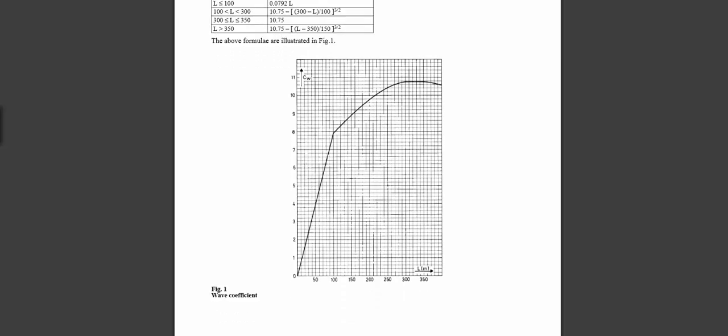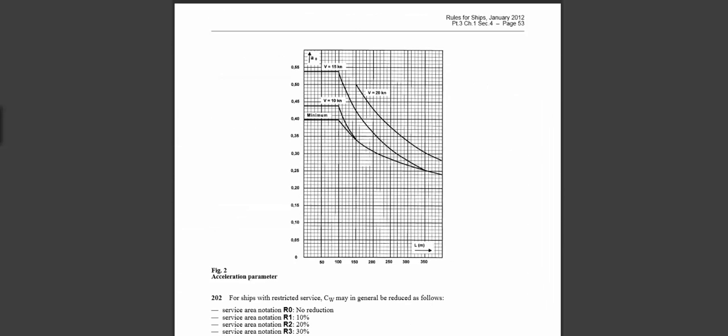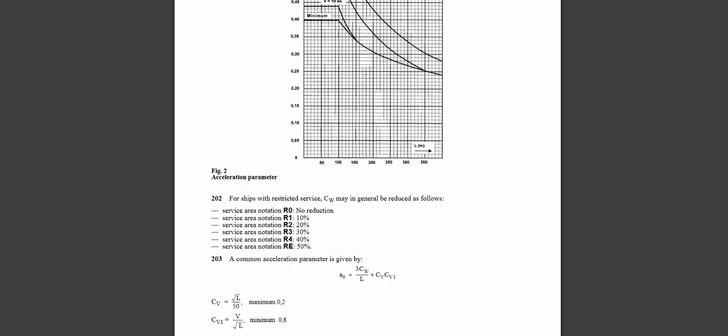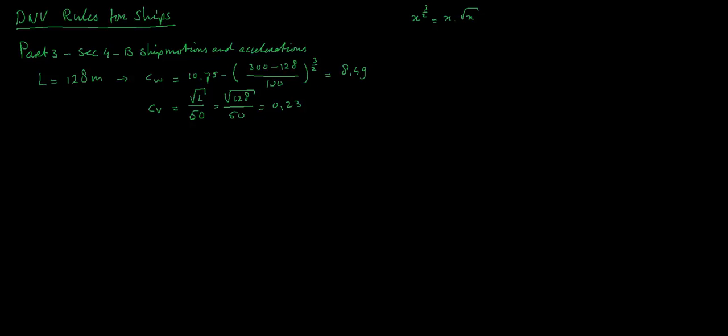It says here Cw and Cv, and we have a maximum of 0.2. That means in our case, which is bigger than 0.20, Cv is 0.2.